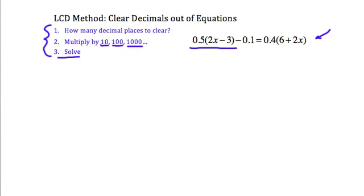My next term is this 0.01, and again, just one decimal place there. Finally, on the right side, my third term in this equation, I just have this 0.4. So in all of those terms, I only have one decimal place to clear. Since I only have one decimal place to clear, I am going to multiply this equation by 10. If I had two decimal places, I'd multiply by 100, so on and so forth. But here I just need to multiply by 10.